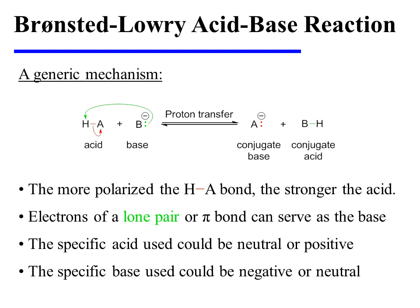This yields a conjugate base A⁻, in which A now owns the red pair of electrons, and a conjugate acid BH, in which the green electrons have been used to make the new B-H bond.